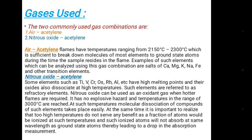Now, what are the gases used for the AAS instrument? Two commonly used gas combinations are air-acetylene and nitrous oxide-acetylene. Air-acetylene flames have a high temperature ranging from 2150 to 2300°C, which is sufficient to break down molecules of most elements to ground-state atoms.